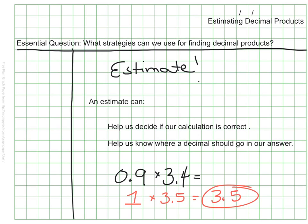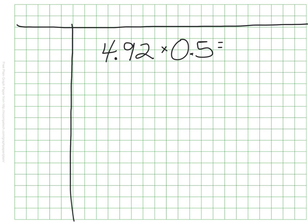Let's do the same thing with 4.92 times 0.5. I know that 4.92 is awfully close to 5, and I can probably just keep the 0.5 as 0.5, because I can work with a half pretty easily.